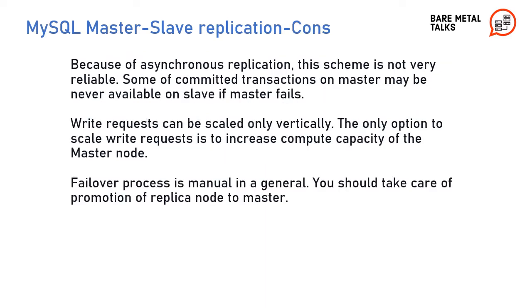Cons of Master-Slave Replication: because of asynchronous replication, this scheme is not very reliable. Some committed transactions on the master may never be available on the slave if the master node fails. Write requests can be scaled only vertically — the only option to scale write requests is to increase the compute capacity of the master node. The failover process is manual in general; you must take care of promoting a replica node to master.